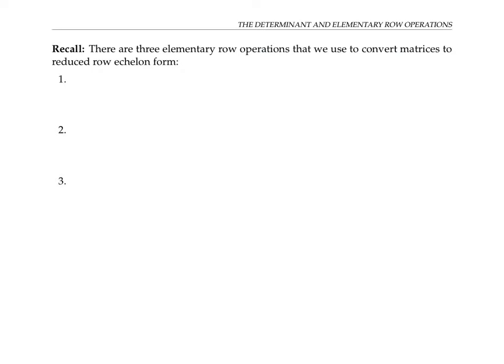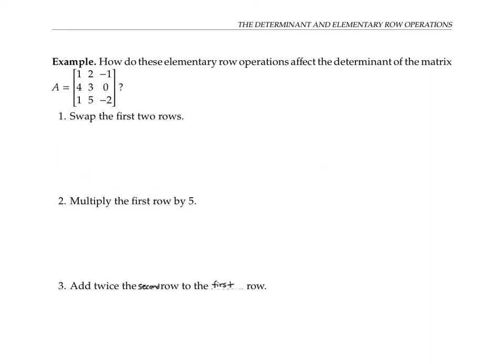Now let's move on to the main topic of this video: the elementary row operations. Recall that there are three elementary row operations used to convert matrices to reduced row echelon form. First, we might switch two rows. Second, we might multiply a row by a number. And third, we might add a multiple of one row to another row. Let's see what those elementary row operations do to the determinant of a matrix.